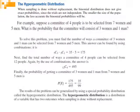Another important distribution is the hypergeometric distribution. We use the binomial distribution when trials are independent. But when trials are not independent — specifically, when sampling is done without replacement — the binomial distribution does not give the exact probability. The smaller the population size, the less accurate the binomial probabilities will be. In this case, we use the hypergeometric distribution.